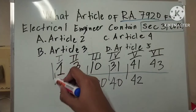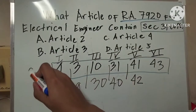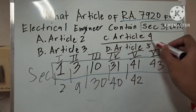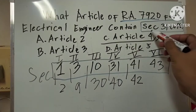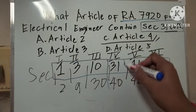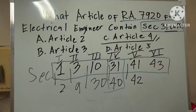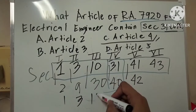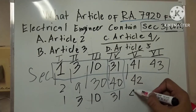Ito tatandaan nyo. Ito ay section 31 to 40. In this case, ang sagot nito is Article 4, kasi section 31 hanggang section 40. So yun lang guys — hindi ito tinuro sa amin nung nagre-review pa lang kami. Parang na-discover ko na lang sya na mas madali itong shortcut: 1, 3, 10, 31, 41, and 43.